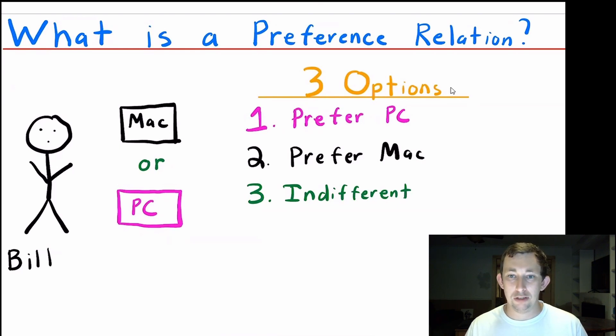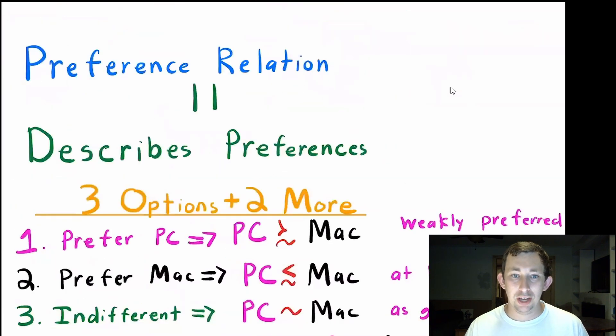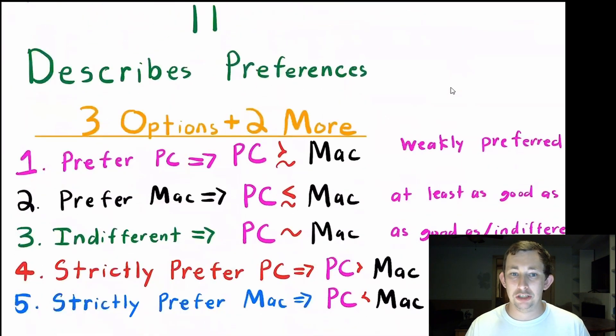So really a preference relation is just trying to formalize those preferences in a way that we can write them down and later use them to make utility functions. A preference relation, again, really just describes preferences.